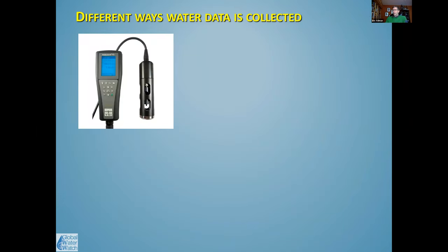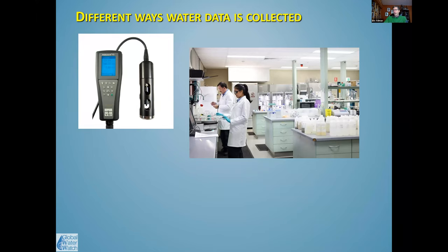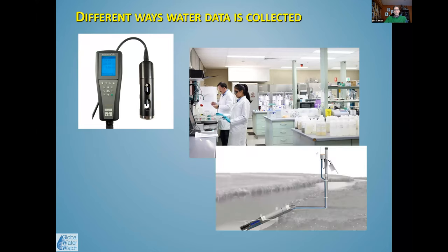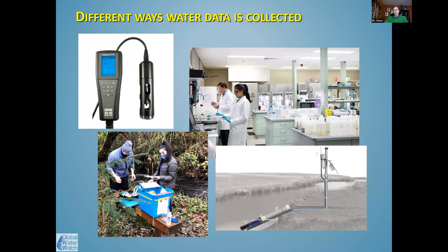There are different ways to collect the data. One is with an electronic meter, which has a probe and a display. You calibrate it, drop it into a stream, and it gives a relatively instantaneous reading. You can also collect samples and take them to a laboratory. There are continuous meters connected to data loggers that track variables like temperature, turbidity, and flow. Volunteer programs can use test kits — inexpensive chemical titration-based tests.